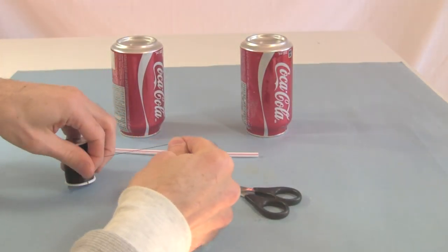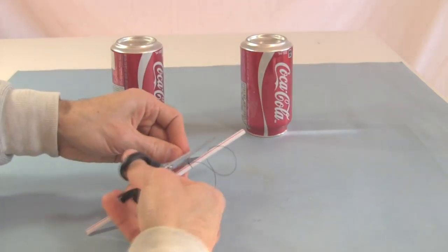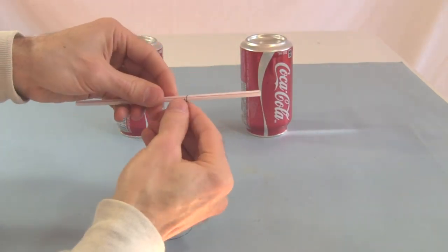First, cut a length of thread and tie it to the drinking straw. Like so.